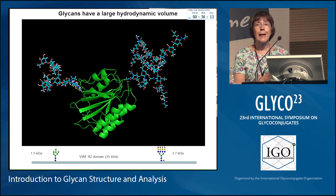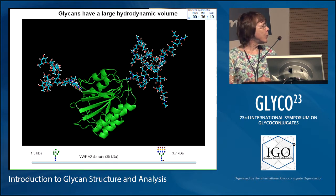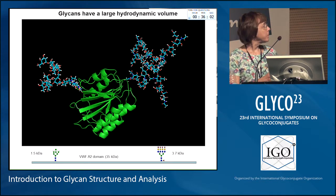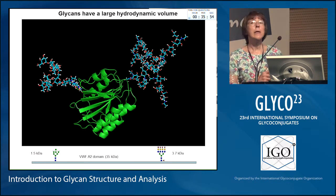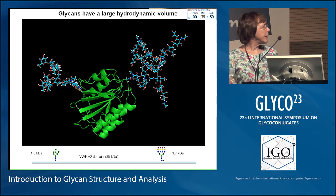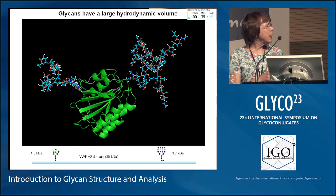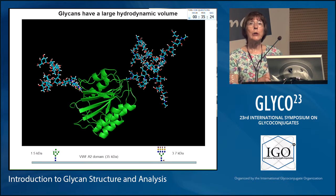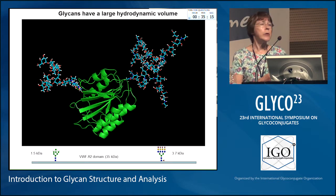That's highlighted here with a moderately accurate picture of one of the domains of a blood protein called von Willebrand factor, which is about 35 kilodaltons in size. This is a reasonably accurate picture from crystal structure of the backbone of that domain, and here are two glycans modeled onto it. On the left is a high-mannose glycan, about 1.5 kilodaltons. On the right is what we refer to as a complex-type glycan, 3.7 kilodaltons. So this is about 10% and this is about 5% of the weight of the protein — but notice that in terms of hydrodynamic volume, these glycans are occupying an equivalent space to the protein. It is important to remember that from the point of view of function.